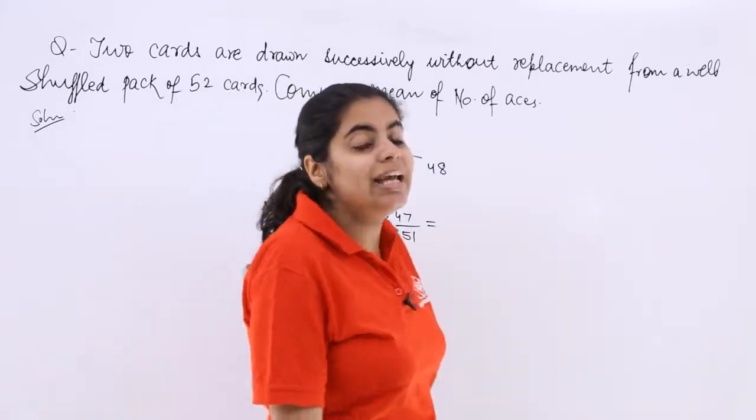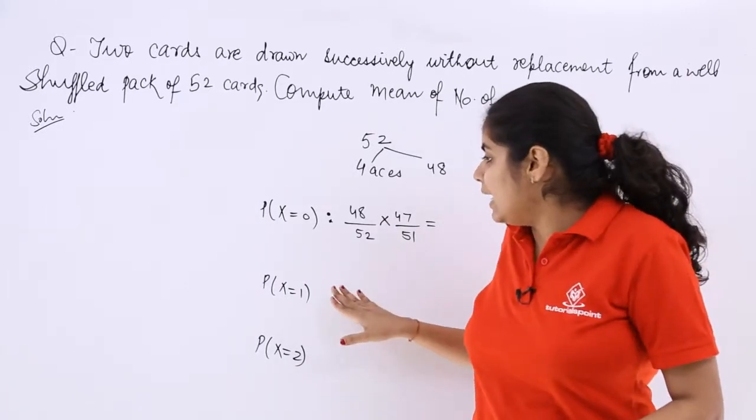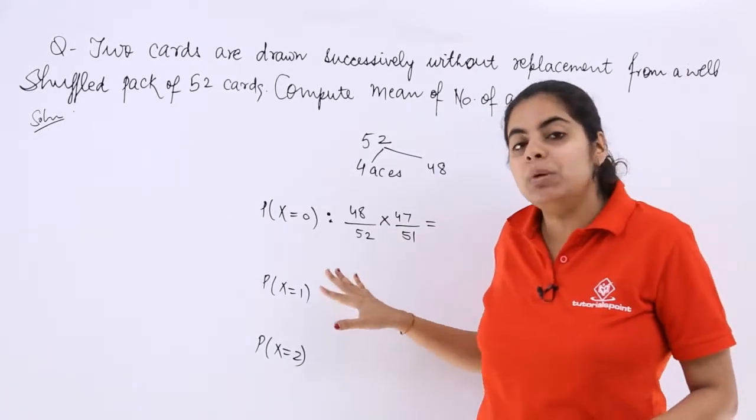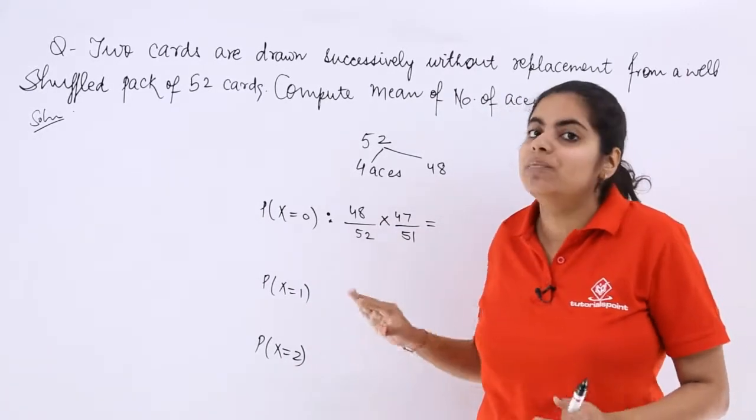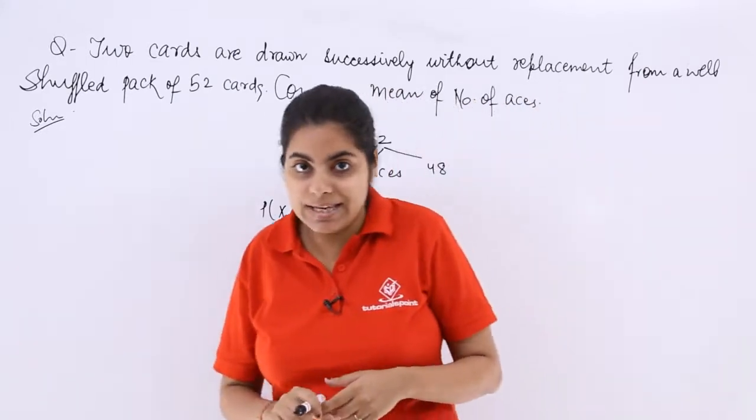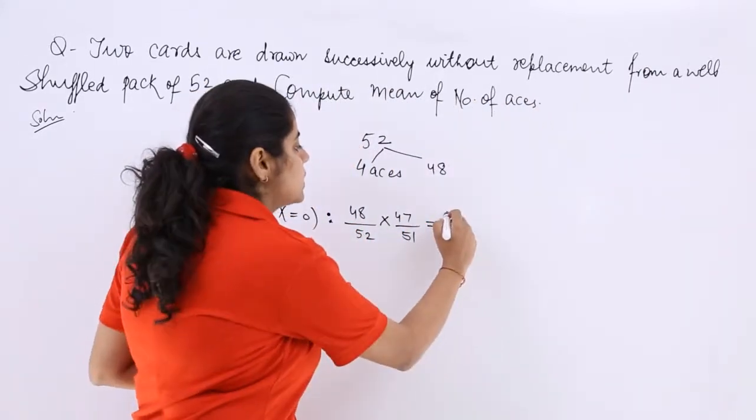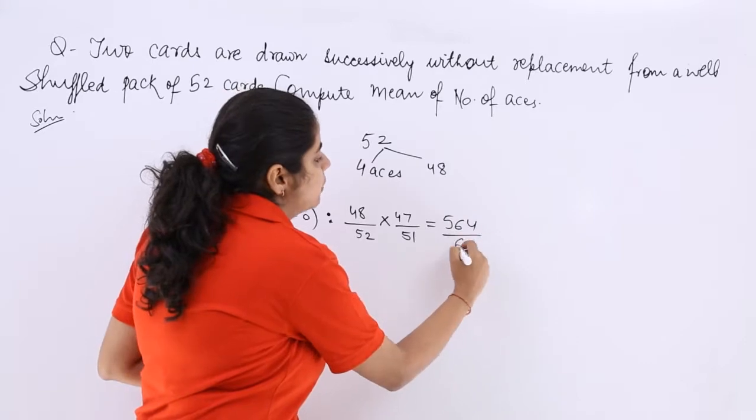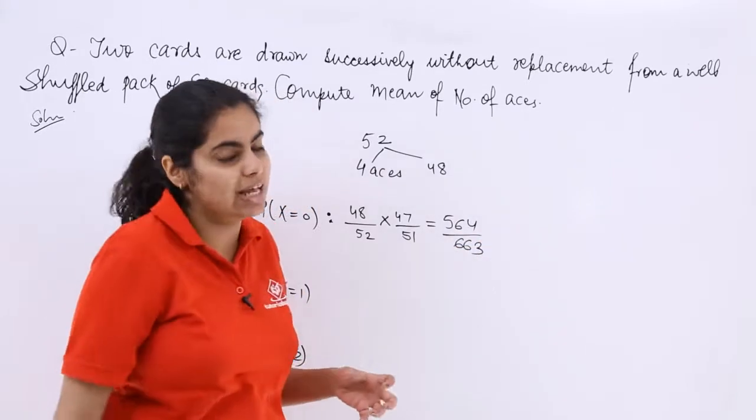Then is probability X equals 1. Before that let's write the answer for P(X=0). This is 564 over 663.